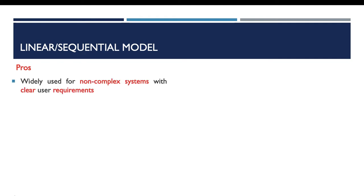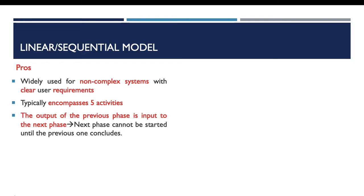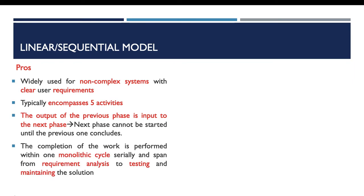The linear model mainly encompasses five activities, and the output of the previous phase is the input to the next phase. So we cannot start any phase until the previous one concludes. The work is performed within one monolithic cycle, which starts from requirement analysis to testing and maintaining the solution.